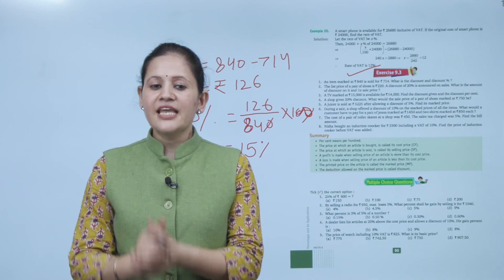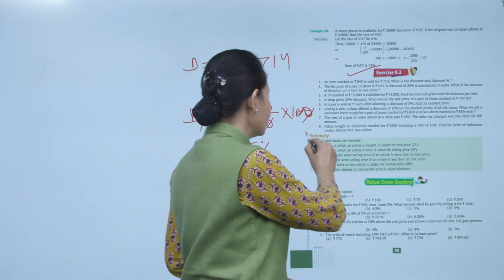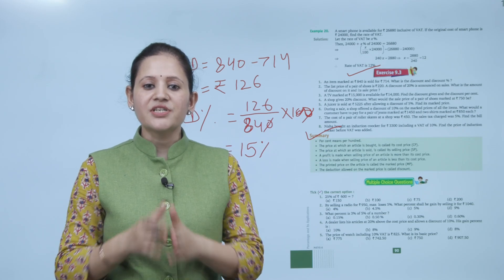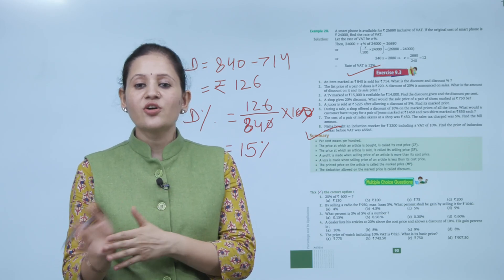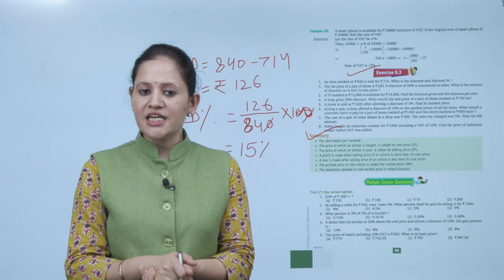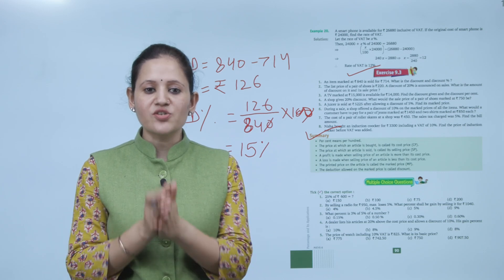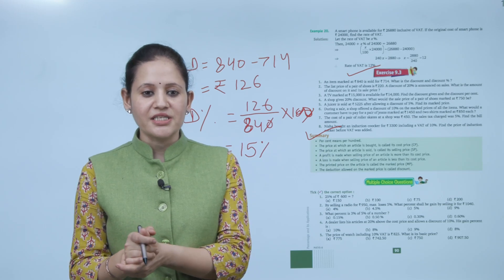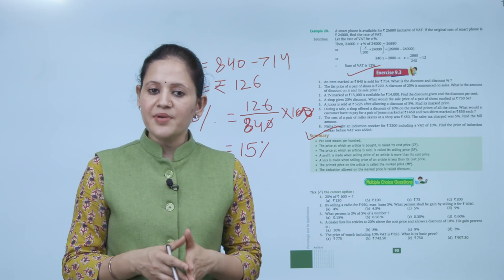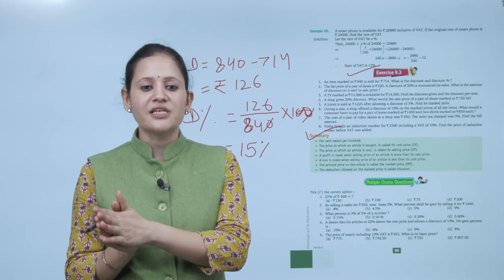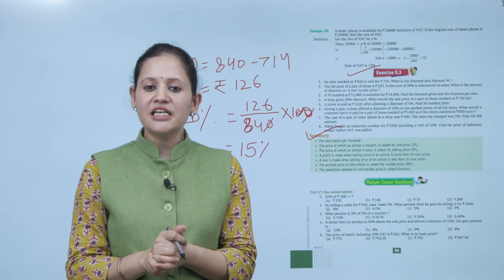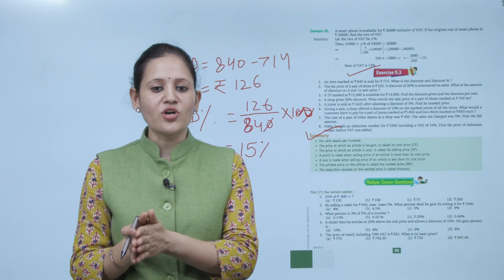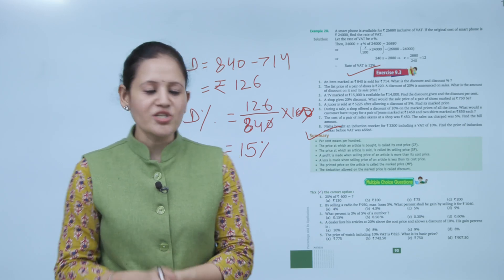Summary: Percent means per hundred. CP is the price at which an article is bought; SP is the price at which it is sold. Profit is made when SP > CP; loss is made when SP < CP. The printed price on an article is the marked price (MP). The deduction allowed on the marked price is called discount.